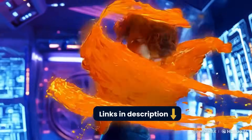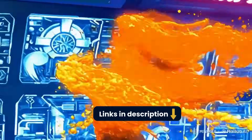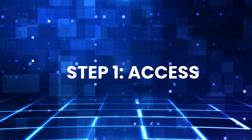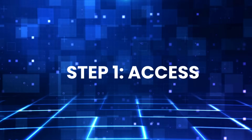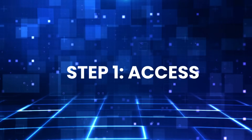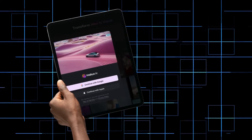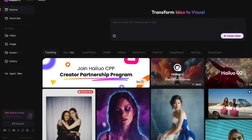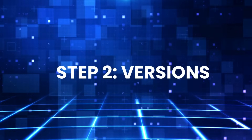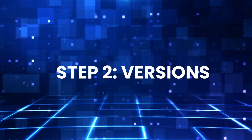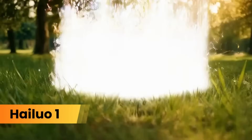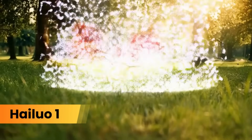Step one: access. Head to the Halo platform on desktop, mobile, or API. Signing up is quick, and even the basic plan gives watermark-free exports. Higher tiers unlock 1080p.